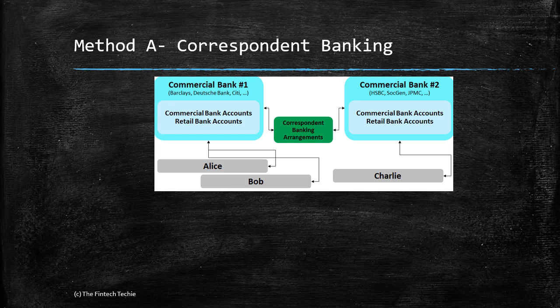To understand how money moves, it is important to understand how settlement happens. There are three types of settlement. Let's look at the first one — Method A, which is the correspondent banking type of settlement.